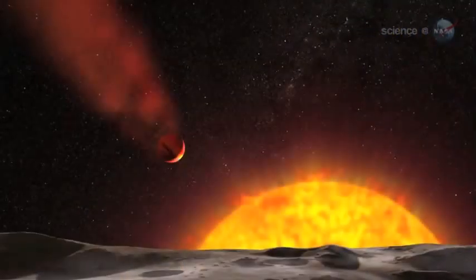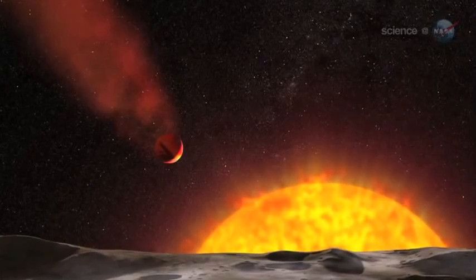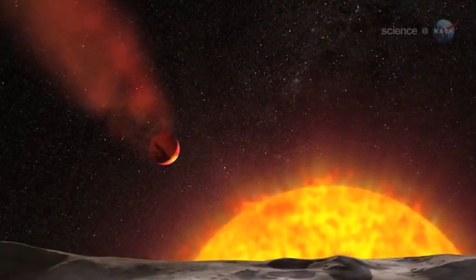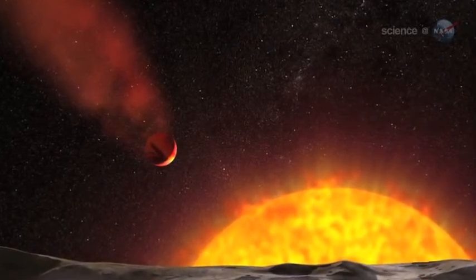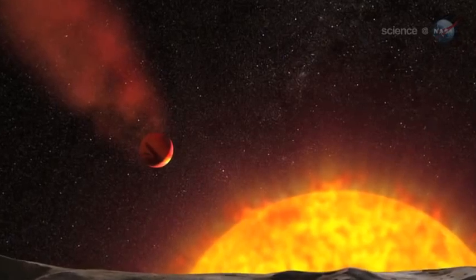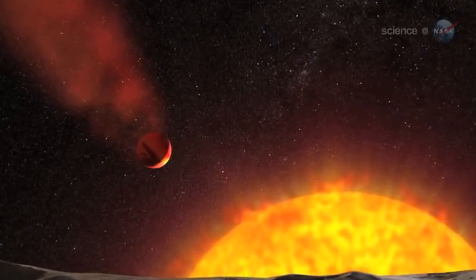KORU-2b orbits at breakneck speed, making a complete circuit around its parent star in only 1.7 days. Because the planet and star are linked by strong tidal forces, the headlong rush of the planet speeds up the star, causing it to rotate faster than it otherwise would.